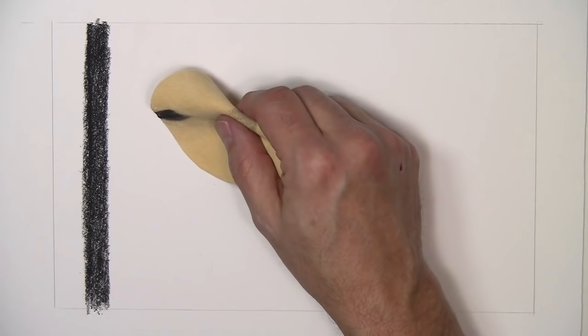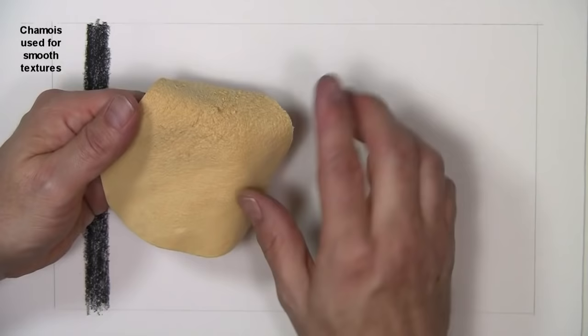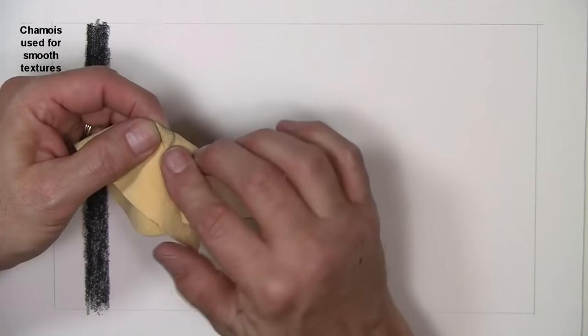Now I'm going to start off by showing you a chamois. A chamois creates the smoothest textures that I know how to create. You want to start off by using the part of the chamois that's the smoothest, not the rough side. And this is how I fold it. So it's folded once and then I fold it again to make sort of a little triangle or kind of a point to it.